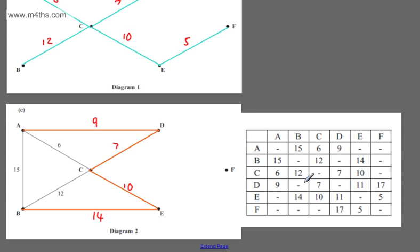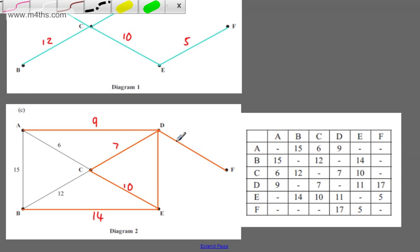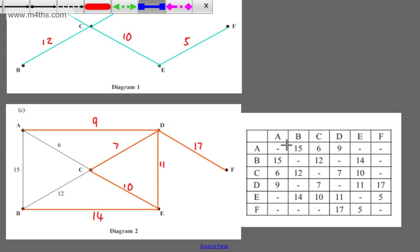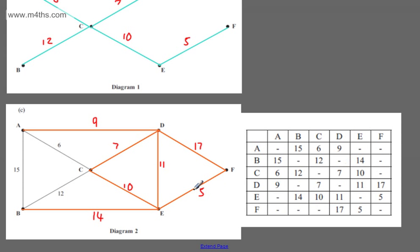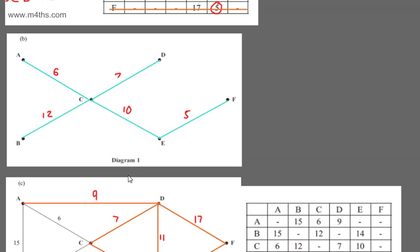Looking at D: D goes to A, C, E, and F. We already have A and C, so we connect D to E = 11 and D to F = 17. For E: E goes to B, C, D, and F. B to E, C to E, and D to E are already done — all we need is E to F = 5. And by symmetry, we can work through F as well — D to E is already done. Let's just check we've got all the weights on. That's our two marks.